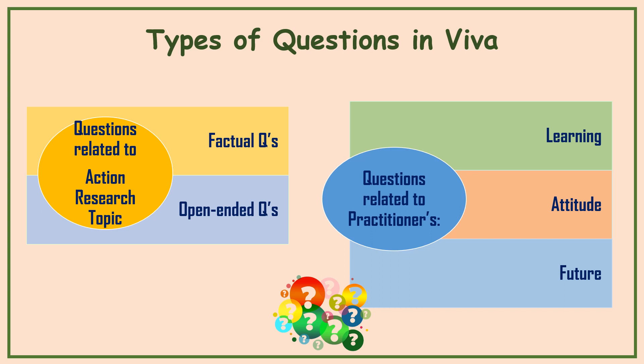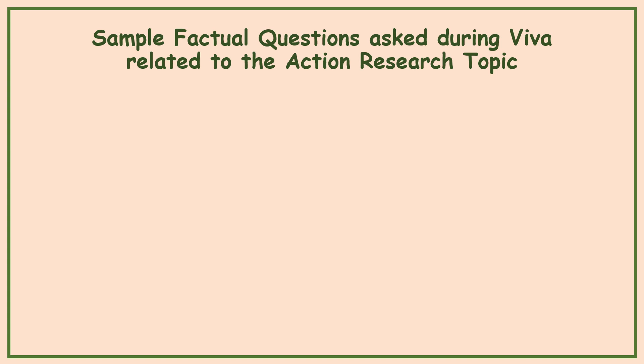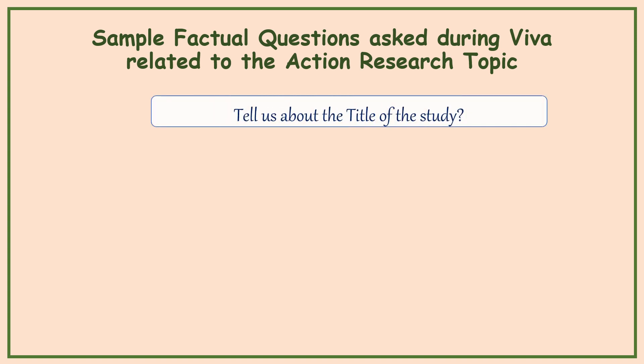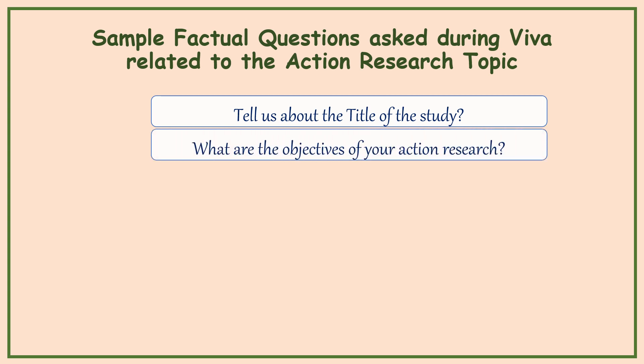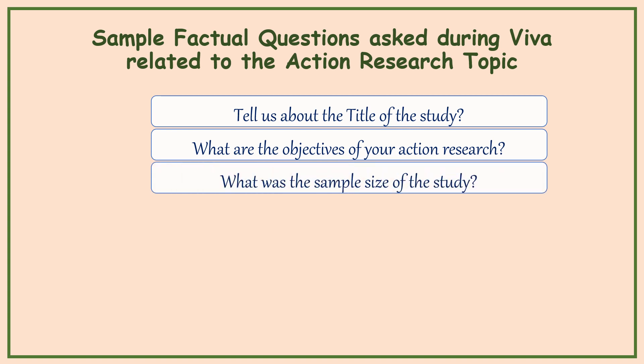Let us see sample factual questions asked during Viva related to the action research topic. The first question is: Tell us about the title of the study — you need to tell the examiner about your topic. Next: What are the objectives of your action research? You need to remember the one or two objectives you made. Then: What was the sample size of the study? Make sure you clearly know how many students' data you gathered — the sample size should be consistent across pre-test and post-test.